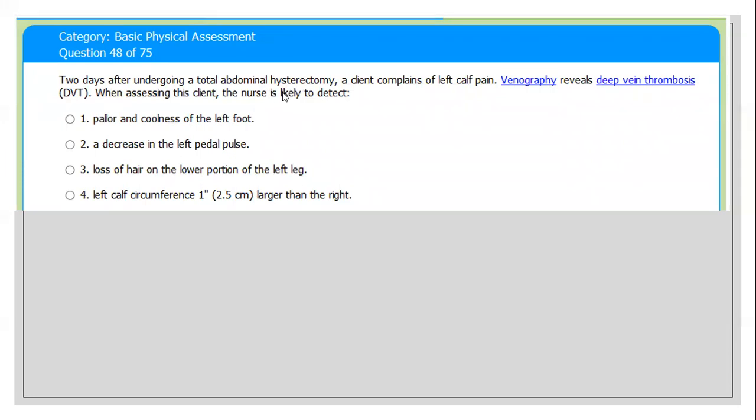Next question. Two days after undergoing total abdominal hysterectomy - so the uterus is totally removed, we call it hysterectomy - a client complained of left calf pain. A patient came to the surgical unit after major surgical operation like hysterectomy. Definitely, most of the time they have to take bed rest. During this time, there's a chance to develop deep vein thrombosis because of immobilization. The client complained of left calf pain and a venogram revealed deep vein thrombosis, we call it DVT. When assessing the client, the nurse is most likely to detect which signs indicating the patient has deep vein thrombosis?